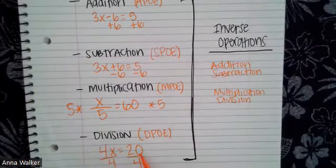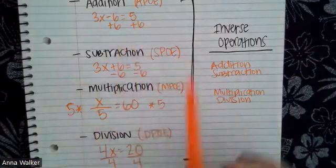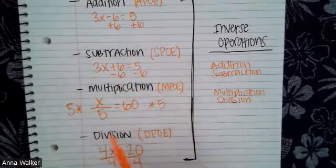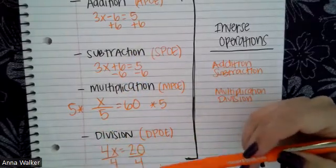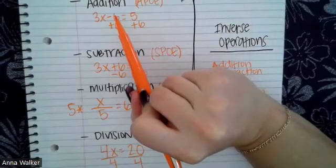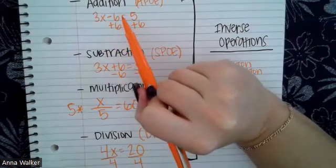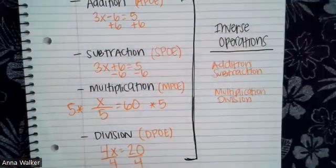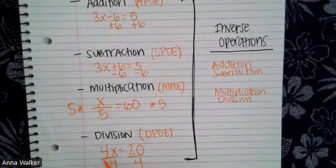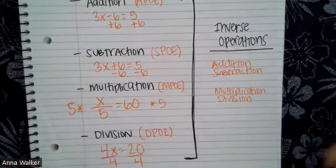If I divide 20 by 4 to figure out what x equals, then I have to divide by 4 on the other side too. You'll notice that when you add, subtract, multiply, or divide, you end up using the multiplicative or additive inverse. For example, up here, if I add 6 to minus 6, it cancels out and we're left with 3x, because minus 6 plus 6 equals zero. And if I do 4 divided by 4, that's just 1 times x, which is x itself. We'll see more about how these properties of equality work when we solve equations in the next few videos.